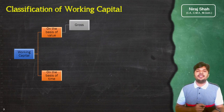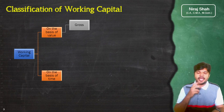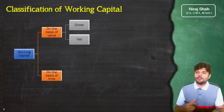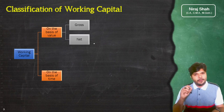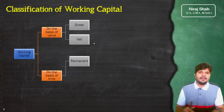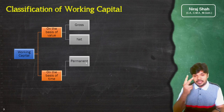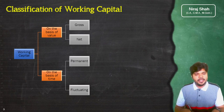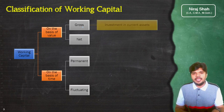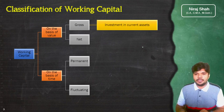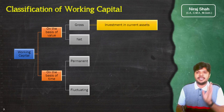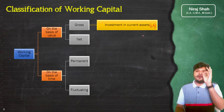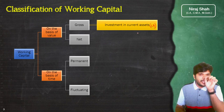On the basis of value में दो तरह की working capital है — gross working capital और net working capital। Gross working capital का मतलब होता है total of current assets — आपने total current assets में जितना investment किया है वो gross working capital है। Net working capital = current assets minus current liabilities। On the basis of time में भी दो तरह की होती है — permanent capital और fluctuating capital।